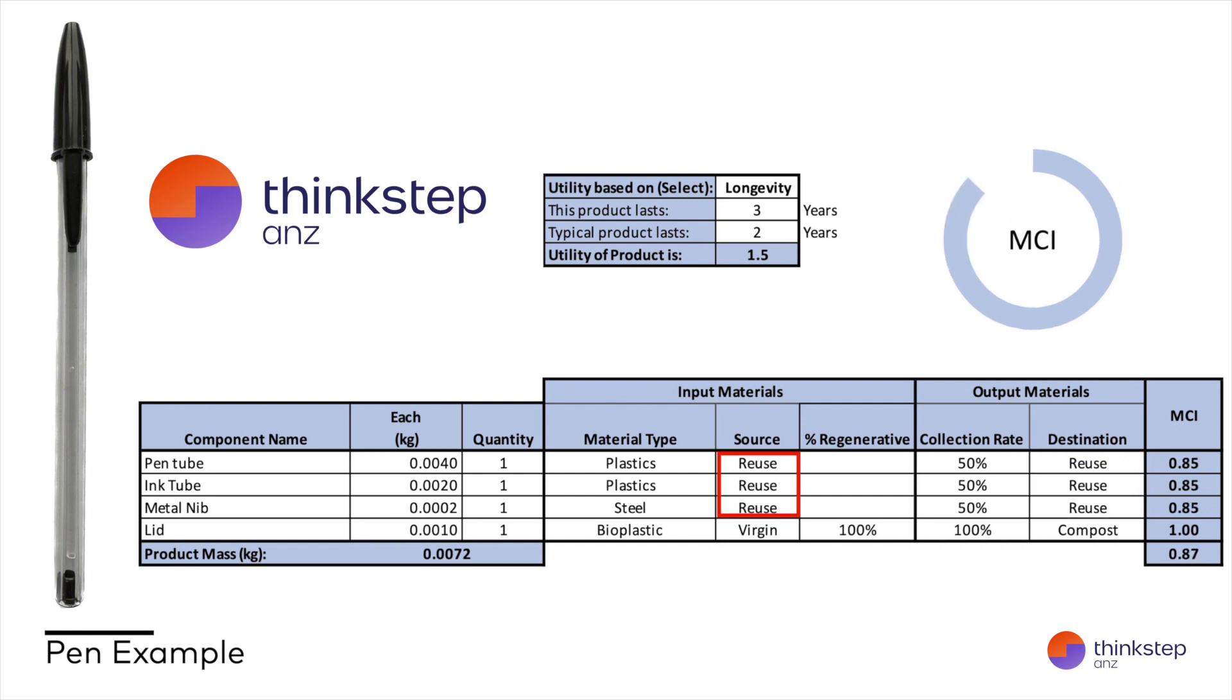For the second life cycle onwards, though, we would be using more reused pens already, and our circularity would be closer to 0.9. The only reason it isn't perfectly circular in this case is the missing 50% of the pen components we're not collecting.